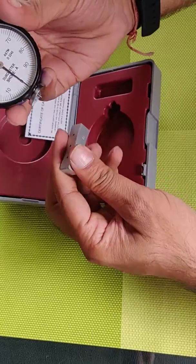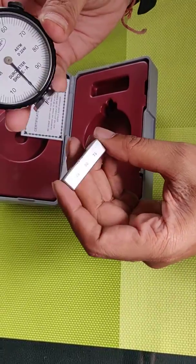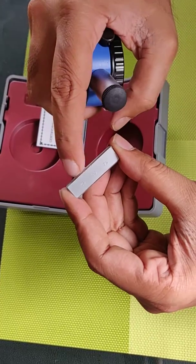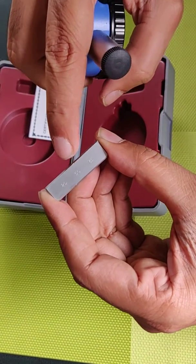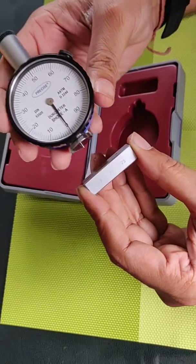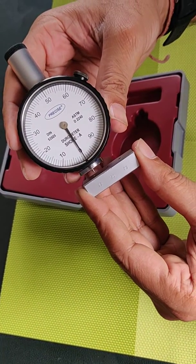And you also have a test block to check whether it's giving you the right reading or not. So we have three readings here: 25, 50, 75. We'll check and show you whether it's giving you the right reading or not.